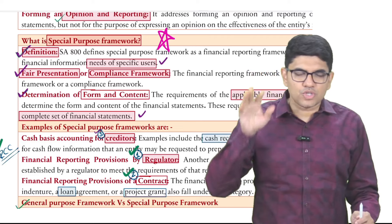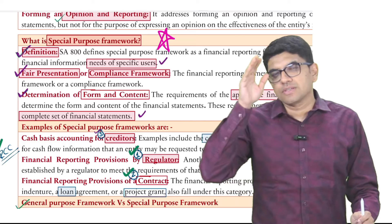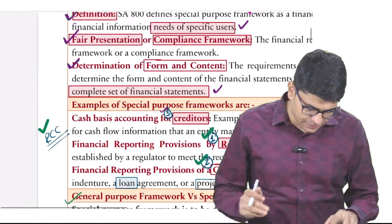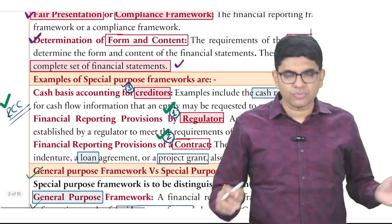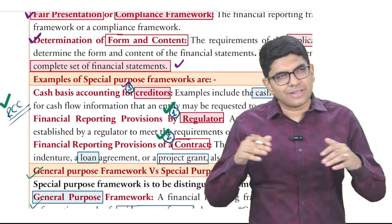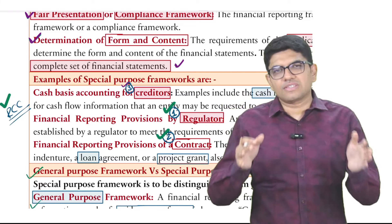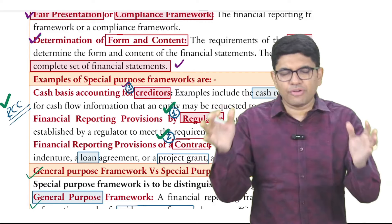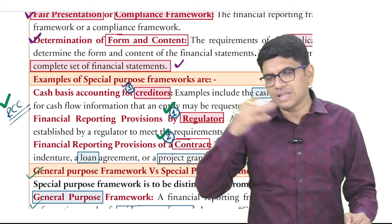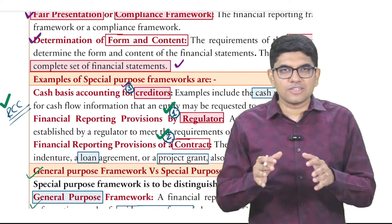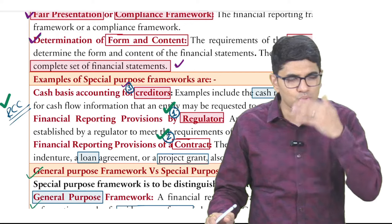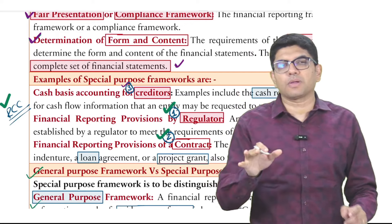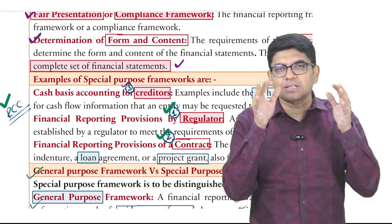Frameworks prepared for specific users are called special purpose frameworks, and financial statements prepared with their help are called special purpose financial statements. For example, the Telecom Regulatory Authority tells all telecom companies to prepare financial statements region-wise — divide the business into seven regions and make columnar financial statements showing earnings, expenditure, assets, and liabilities per region — so it can determine spectrum fees region-wise. That is prepared specifically for the regulator; it is a special purpose financial statement prepared as per the regulator's instructions — that is a special purpose framework.